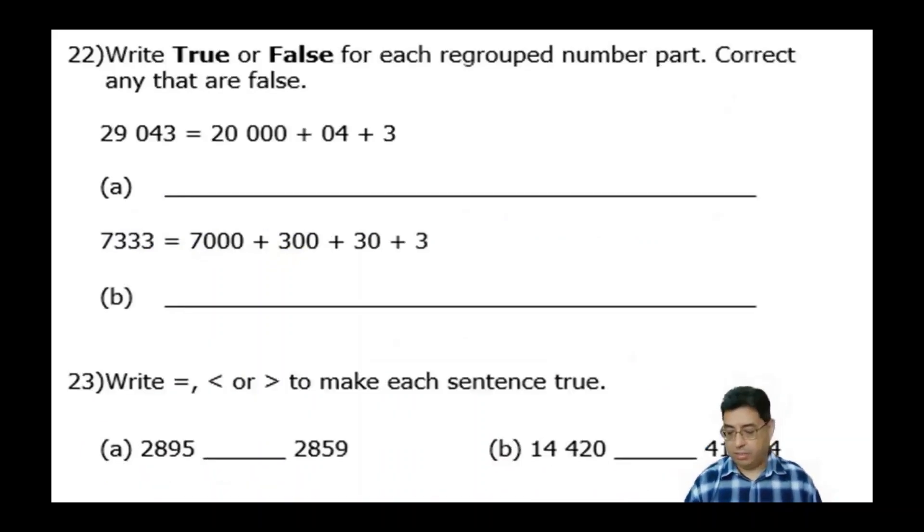Number 22, it says to write true or false for each regroup part. Correct any that are false. So again, reading and comprehension, make sure you're reading this carefully and doing what it says based on the instructions.